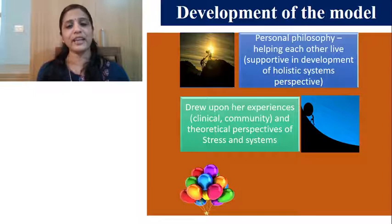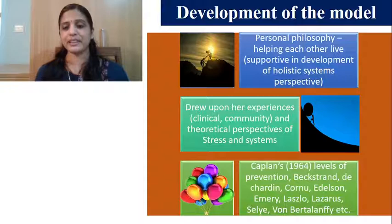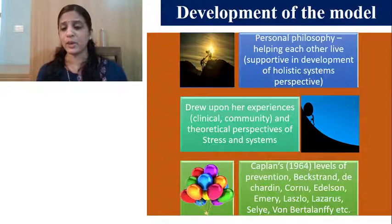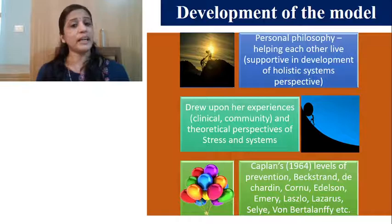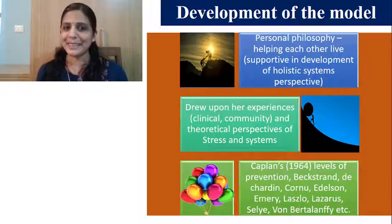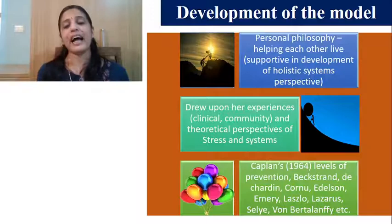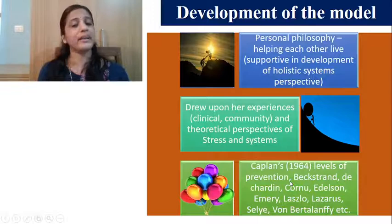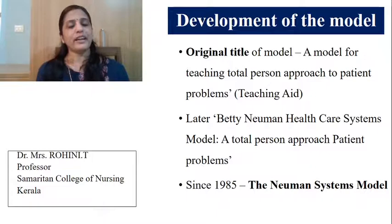She developed her model in 1970. Her students asked her to prepare introductory material covering the physiological, psychological, and sociocultural aspects of a person — how to take care of all these variables when meeting a patient. So students were the people who requested Betty Neuman to prepare an introductory course covering these aspects. It started as a small teaching aid, but later she published her model in the Journal of Nursing Research.